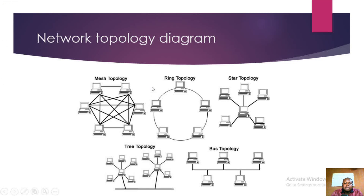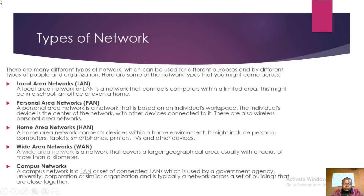This diagram shows examples of network topologies. All systems in the mesh topology are connected together. The ring topology shows systems also connected together, and the star topology is shown as well. We also have the tree topology and the bus topology, where all computers are connected in linear form.